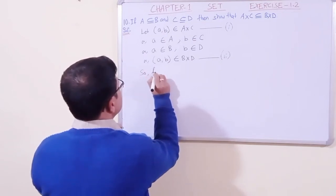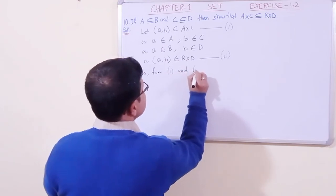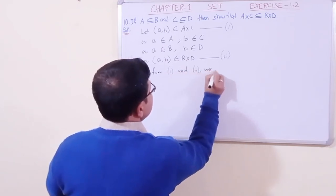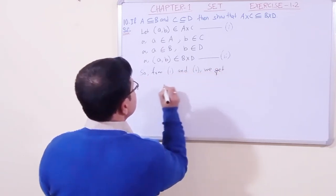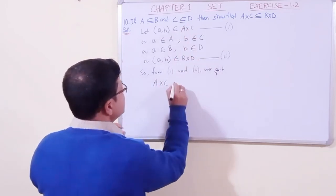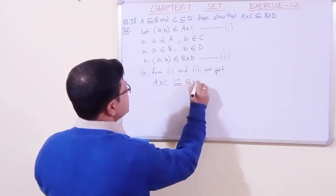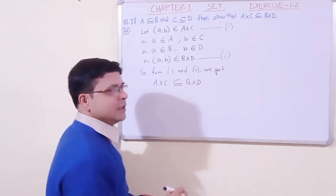So from one and two, we get A×C is a subset of B×D. This problem is very simple, we have found it.